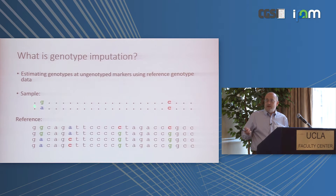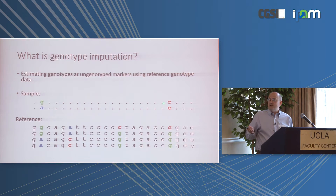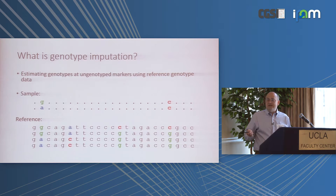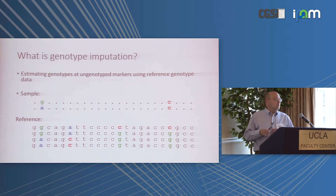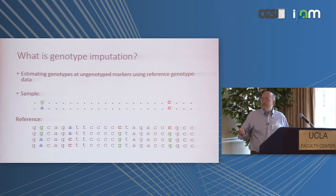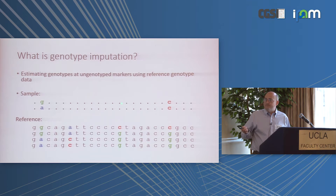You might have a marker where on one haplotype there's a G and on another there's a C, and on the second haplotype for the sample, an A and a C. Based on these reference samples and a probabilistic model, you want to make inferences about what all the missing markers are.